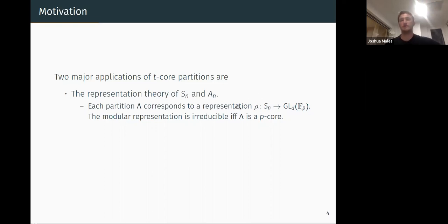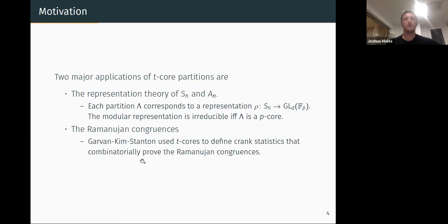The second application is the Ramanujan congruences. I guess everyone here knows these congruences on partitions. These have been proved many years ago using modular arguments, but the first time they were able to combinatorially prove this was Garvan-Kim-Stanton who used t-cores to define certain crank statistics and then give a combinatorial proof.